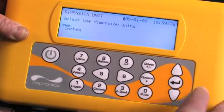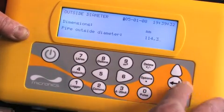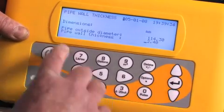Select either millimeters or inches and press enter. Enter the outside diameter of the pipe, then enter the pipe wall thickness.